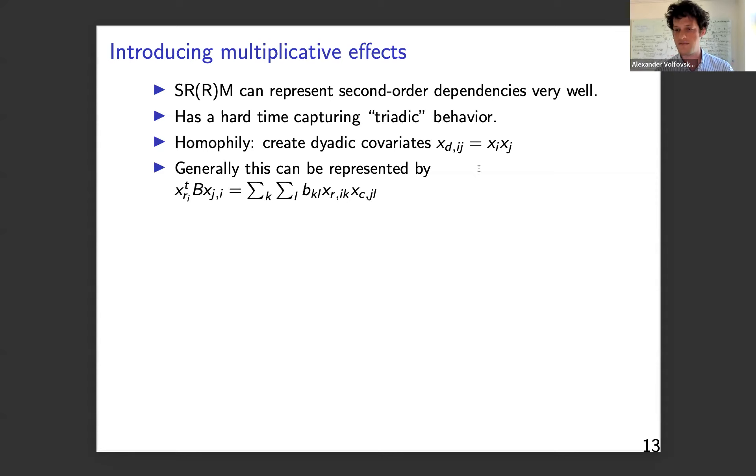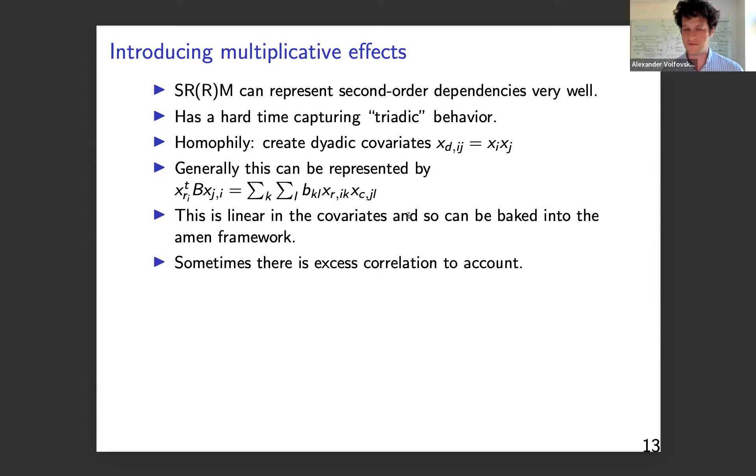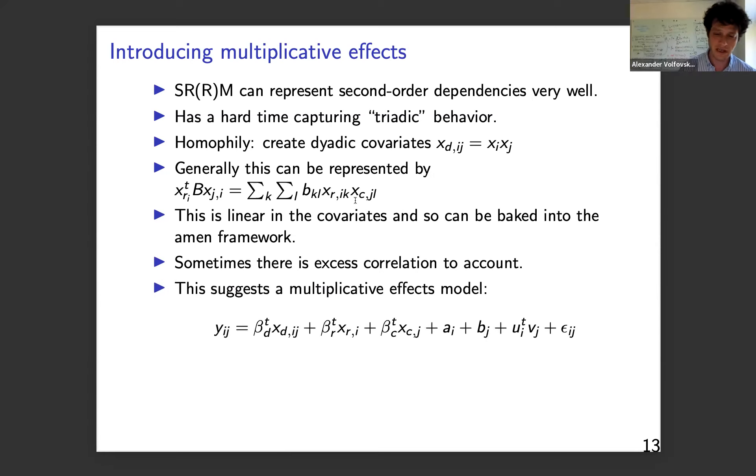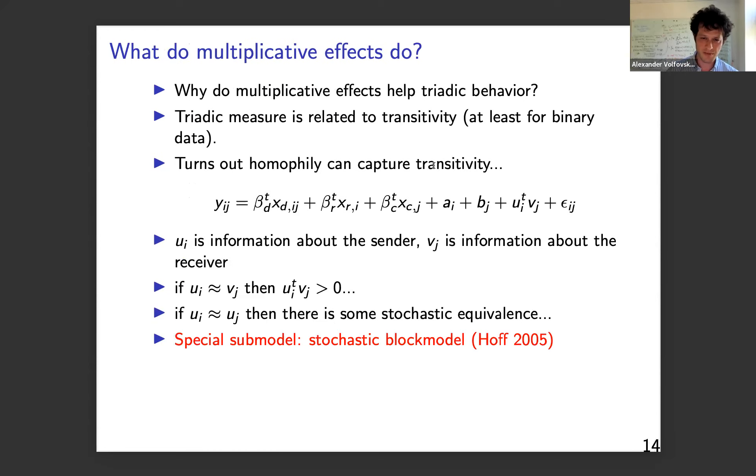And as you can see, everybody in this community sends ties to this community, and pretty much everybody here sends ties here. And so even though none of these people are connected to each other, almost none of them are connected to each other, they're still behaving similarly. And so this is why it's possible to be stochastically equivalent, but not necessarily homophilous. So how do we capture this? And it turns out that this type of triadic behavior, how do you capture that my friend's friend is likely to be my friend, can be captured by these types of multiplicative effects. So you can naturally think about observable homophily.